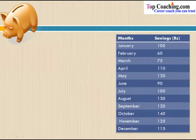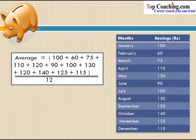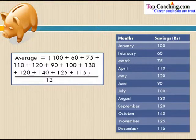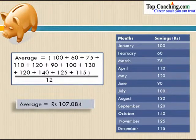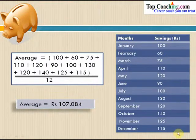Now let's find the average savings for the entire year. We use the formula: average equals sum of all entries divided by total number of entries. So 100 + 60 + 75 + 110 + 120 + 90 + 100 + 130 + 120 + 140 + 125 + 115, all divided by 12 months. We get an average of 107.084. So the mean amount of savings is 107.084 rupees per month — this value gives an indication of the savings that occurred throughout these months.